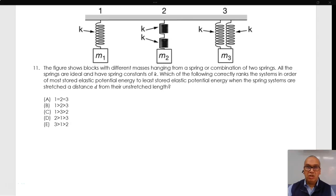11. The figure shows blocks with different masses hanging from a spring or combination of two springs. All the springs are ideal and have spring constants of k.